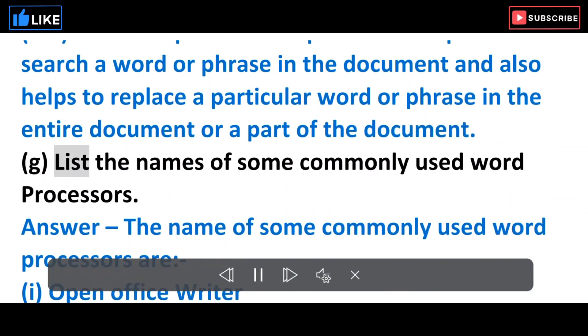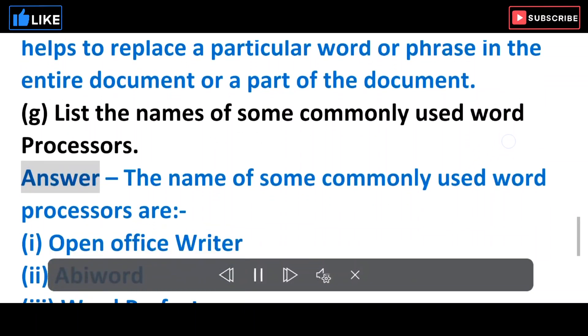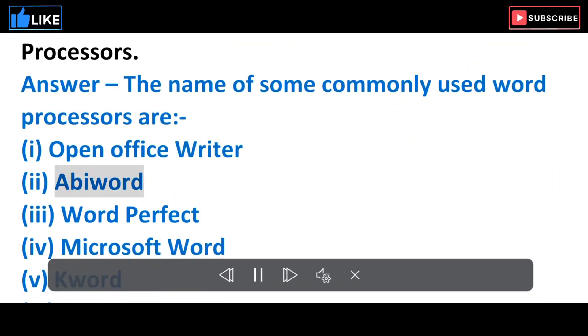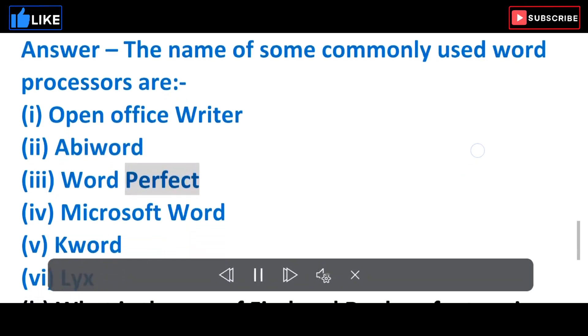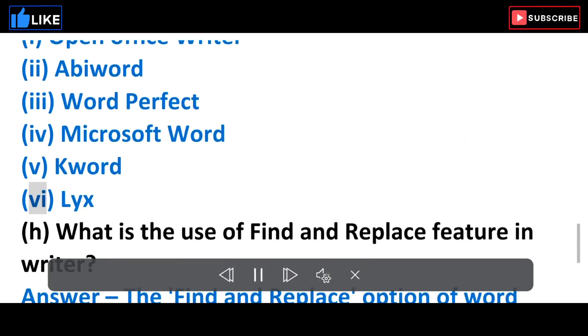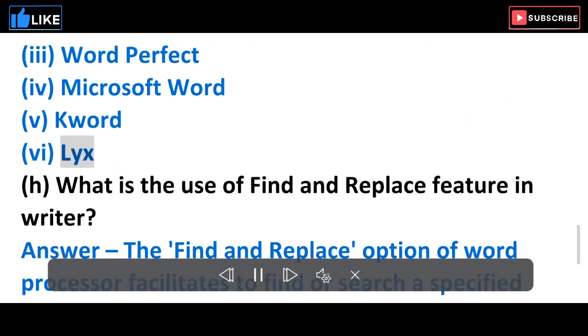G. List the names of some commonly used word processors. Answer: The name of some commonly used word processors are: (i) Open Office Writer, (ii) AbiWord, (iii) WordPerfect, (iv) Microsoft Word, (v) Querd, (vi) Lyx.